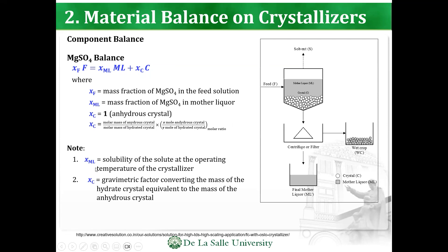Important notes: number 1, the mass fraction of the mother liqueur is the solubility of the solute at the operating temperature. The mass fraction X_C of the crystal is the gravimetric factor converting the mass of the hydrated crystal to the equivalent mass of the anhydrous crystal. F is typically either given or what is required; ML is based on solubilities. X_C depends on whether the crystal is anhydrous (X_C = 1) or hydrated, in which case you must check the molar ratios.